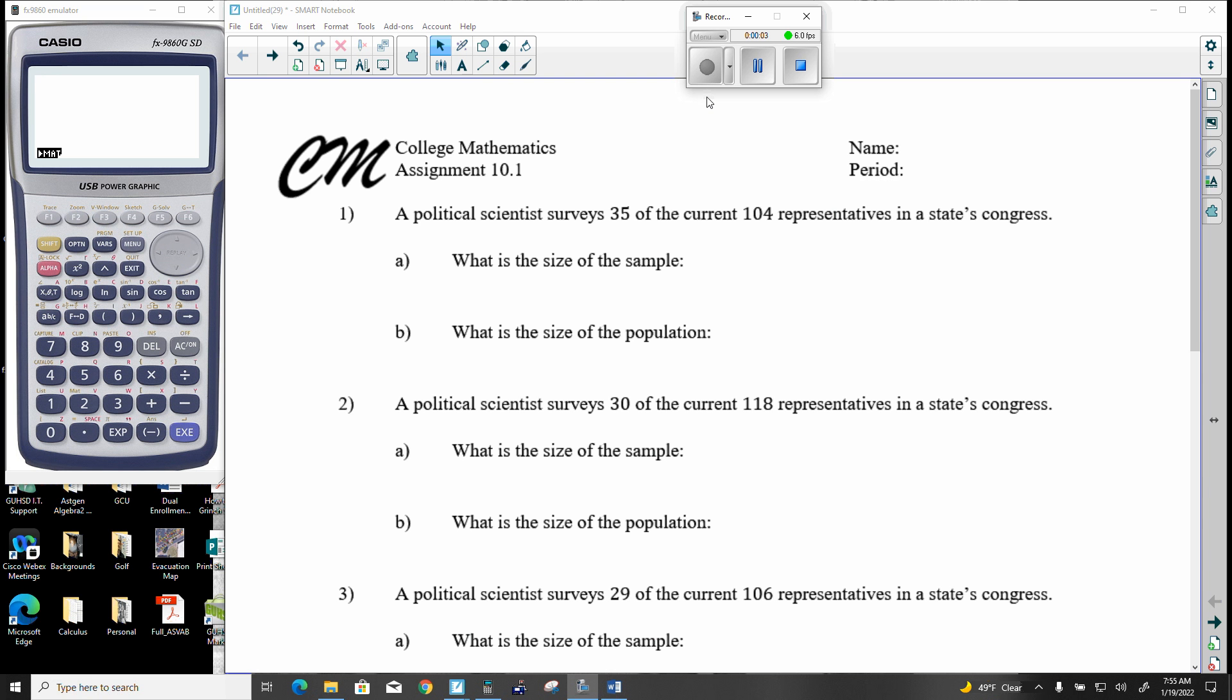All right, let's begin. This is unit 10 and this is dealing with proportions and things like that. All right, so here we go. Let's start. A political scientist surveys 35 of the current 104 representatives in State Congress. What is the size of the sample? And the other one was the size of the population.